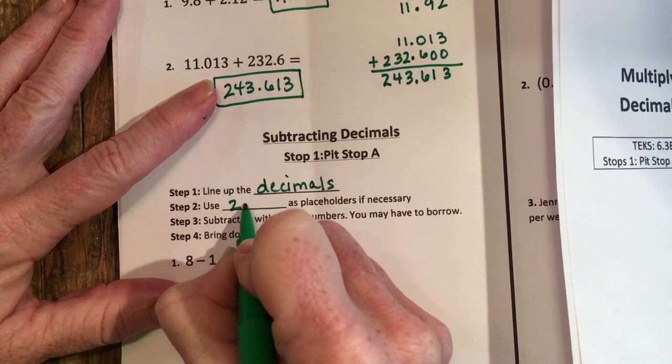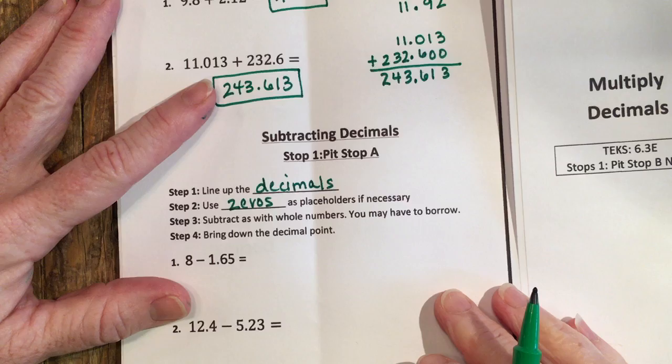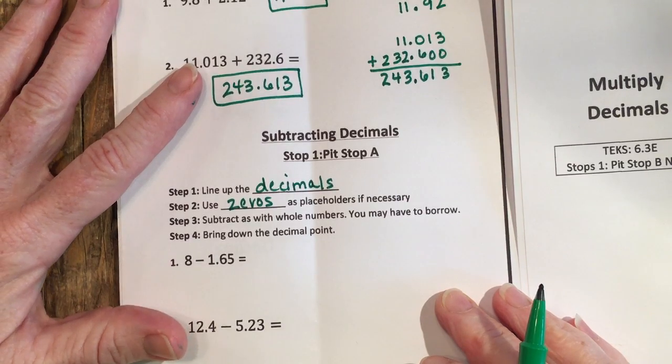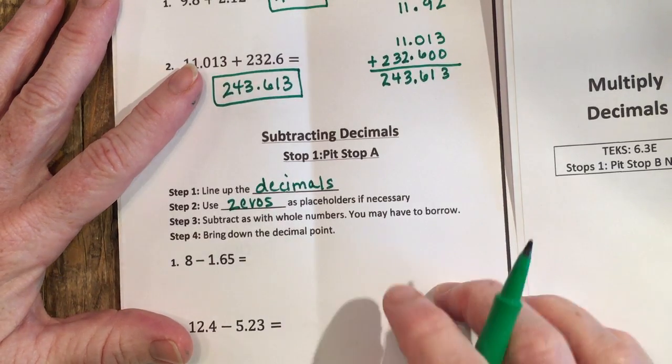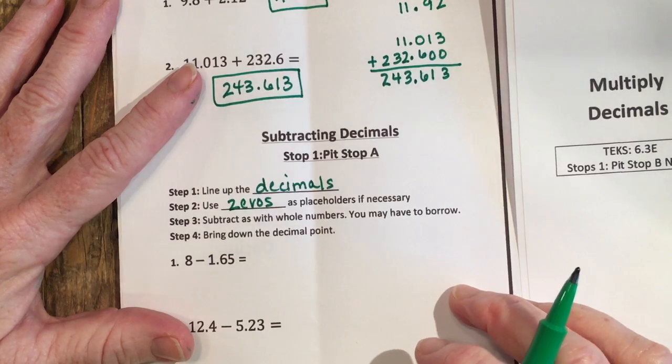Use zeros as placeholders if you need to, then you would subtract like you normally would with a whole number and just be careful if you have to borrow. And then the last step is to bring down the decimal point.